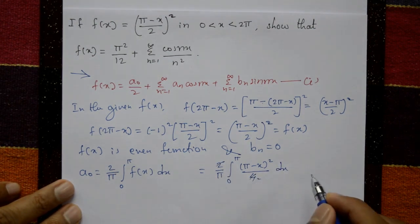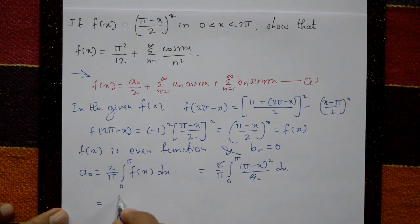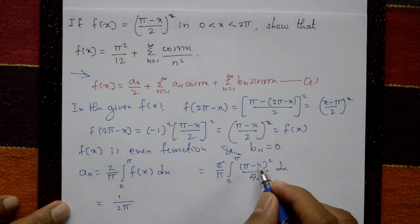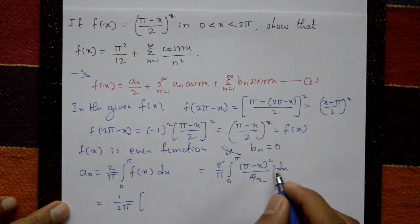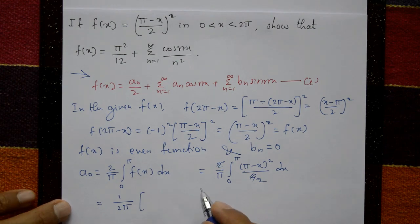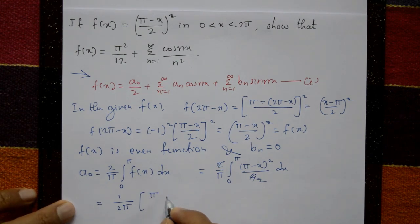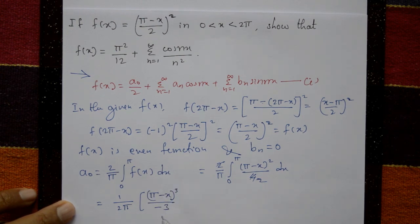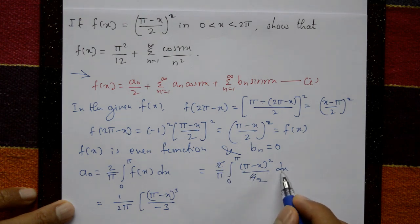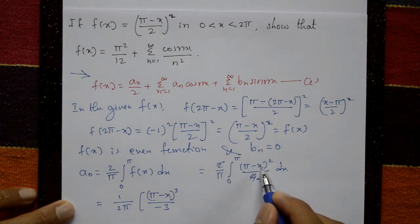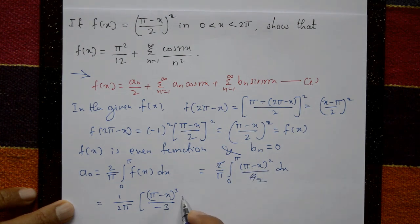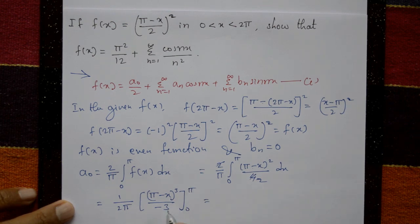Integrating (π minus x)² with respect to x gives (π minus x)³ divided by (minus 3), evaluated from 0 to π. The coefficient becomes minus 1 by 6. Applying the limits: the upper limit gives (π minus π)³ = 0; the lower limit gives (π minus 0)³ = π³.